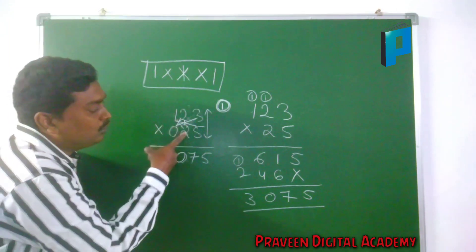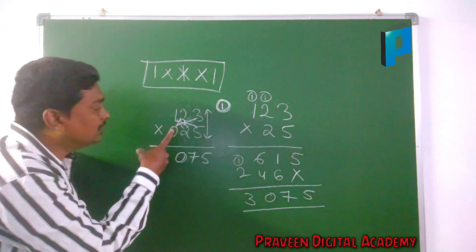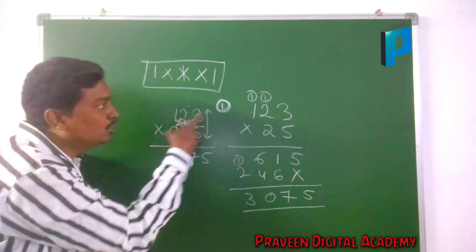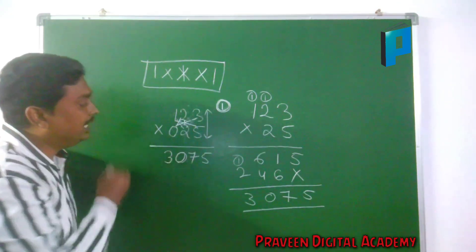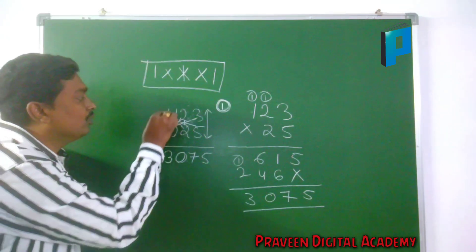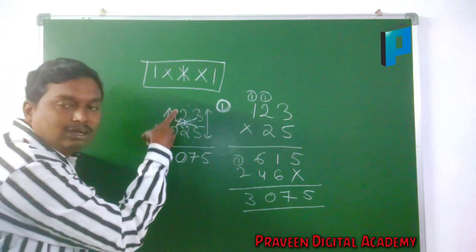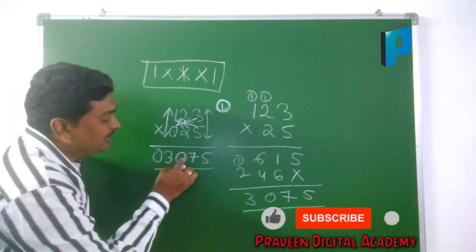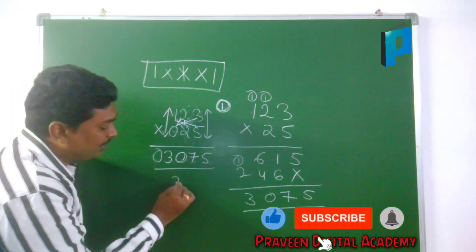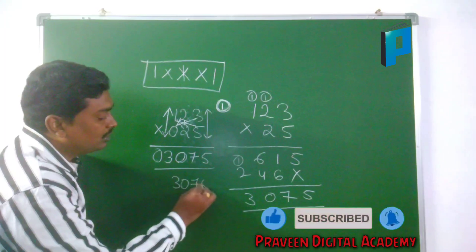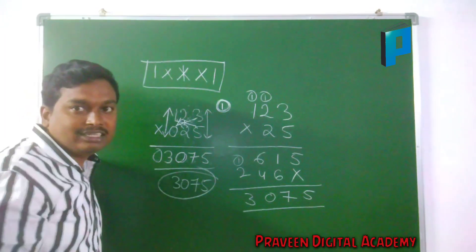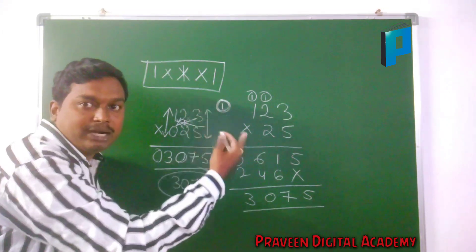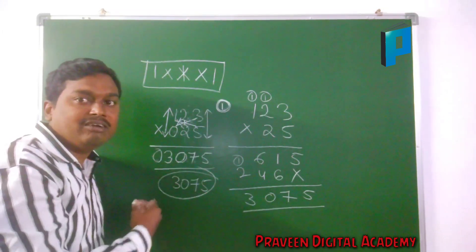Next position: 2×1 is 2, 0×0 is 0, 2 plus 0 is 2, plus 1 carry is 3. Final position: 0×1 is 0. So the answer is 0, 3, 0, 7, 5 — meaning 3075 is the solution for 123 × 25. For any 3-by-2 problem, convert it to 3-by-3 by adding a leading zero, then apply the shortcut.